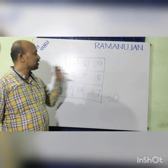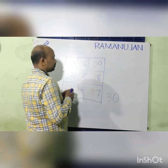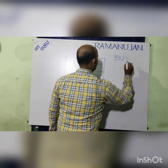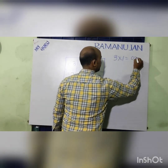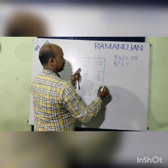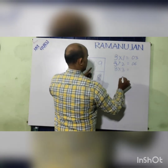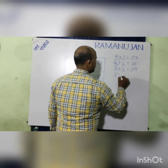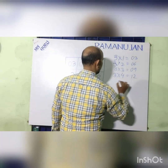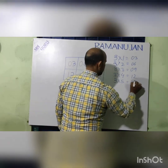See, how easy the method is. Now write down the table here. 3 times 1 is 3. 3 times 2 is 06. 3 times 3 is 09. 3 times 4 is 12. 3 times 5 is 15.